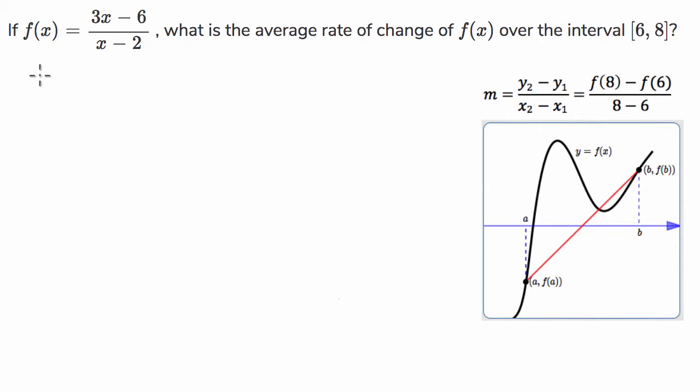So let's start with the function at 8. Now this is going to be equal to 3 times 8 minus 6, divided by 8 minus 2. 3 times 8 is 24, minus 6 is 18, over 6. So this is equal to 3.